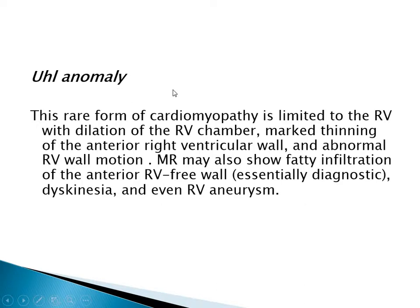UHL anomaly is a rare form of cardiomyopathy limited to the right ventricle, with dilatation of the right ventricle, marked thinning of the anterior right ventricular wall, and abnormal right ventricular wall motion. It is like the dilated type but involves only the right ventricle. MRI shows fatty infiltration of the anterior right ventricular free wall, which is considered diagnostic for this disease.